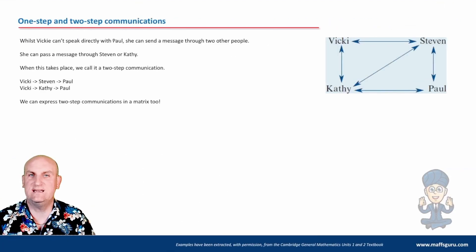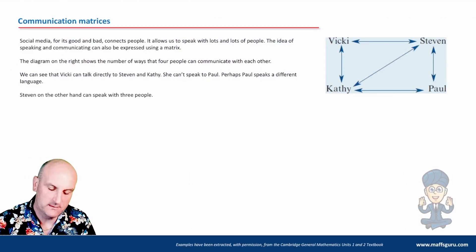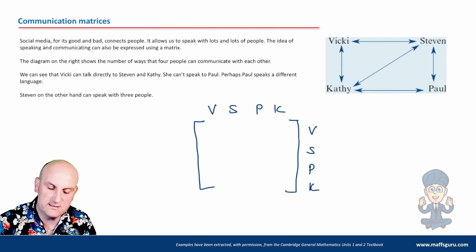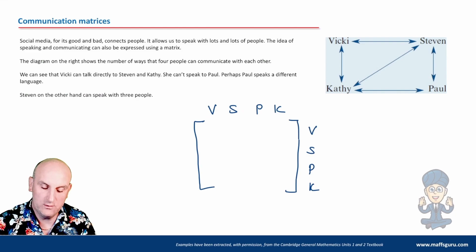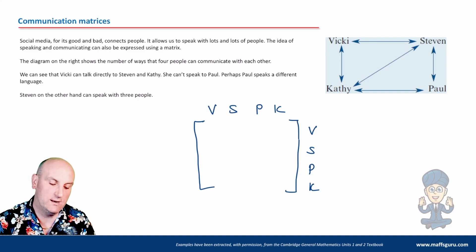Can we express that in some sort of a matrix? I reckon we possibly could. So let's actually have a look and see whether we can put this into a matrix. So we'd have Vicky, Stephen, Paul, Kathy. Vicky, Stephen, Paul, and Kathy. And what you tend to notice is there's no order to which I've put those in, to be perfectly honest with you. But if I go VSPK that way, I'm probably going to go VSPK that way.